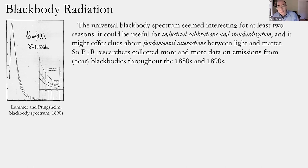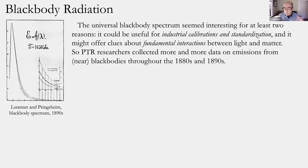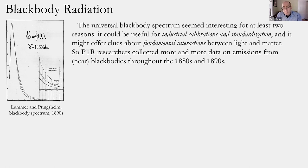The black body concept meant you could study light emitted purely by thermal radiation, removing any accidents of reflected light. If the glow really was universal, it shouldn't matter whether the black body was made of wood, charcoal, or anything else. This universal black body spectrum seemed interesting for two reasons: it would be practically useful for calibrations and standardization of electric light fixtures, and it might tell us something deeply fundamental about the interaction between light and matter.